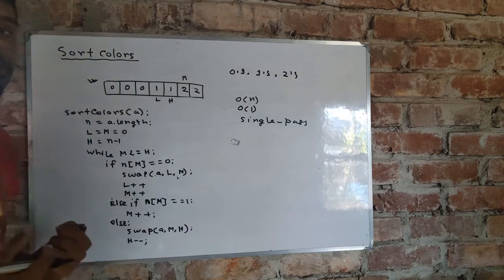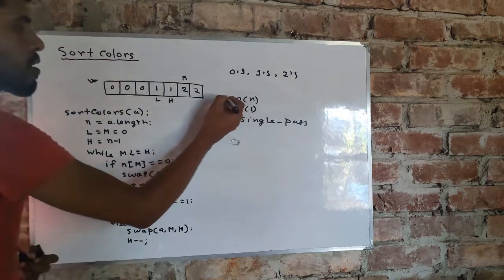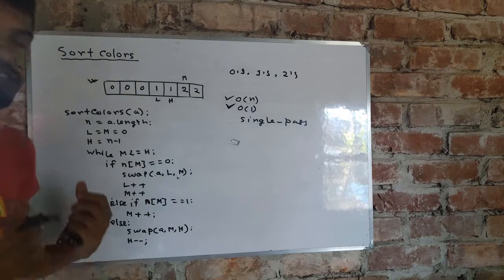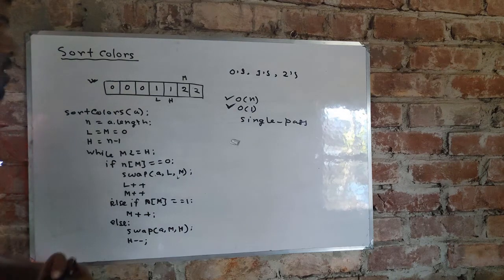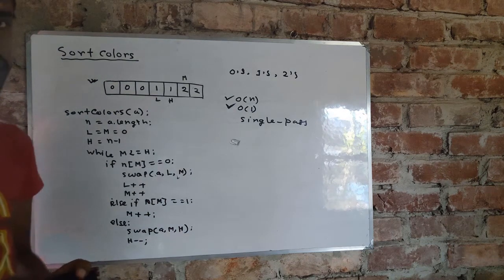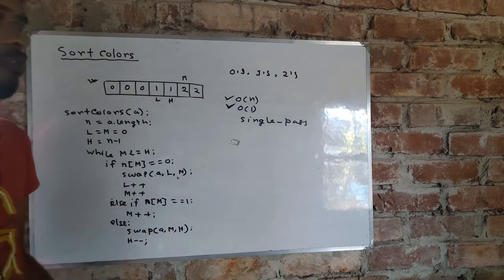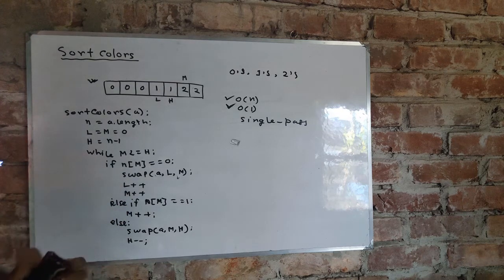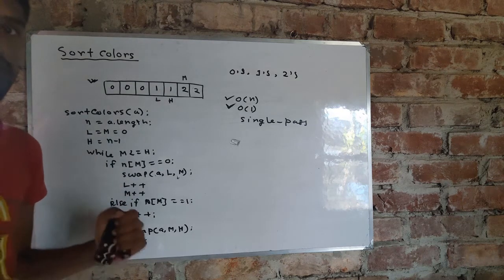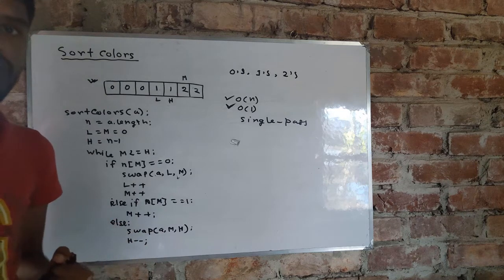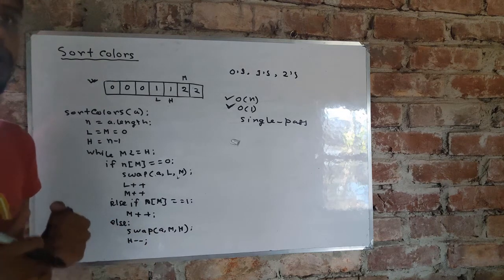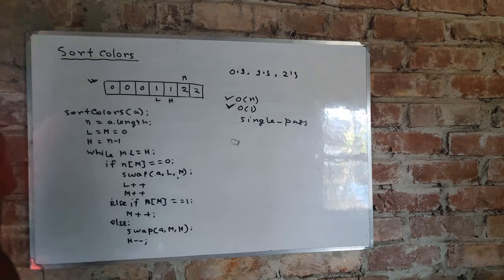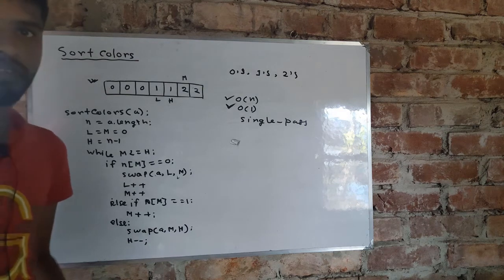And that is our algorithm — solving Sort Colors in a single pass, in linear time and constant space complexity. The solution is a little bit tricky but not too difficult to understand. If you didn't follow the explanation, I highly encourage you to review this video. Thanks for watching, I'll see you in the next video.